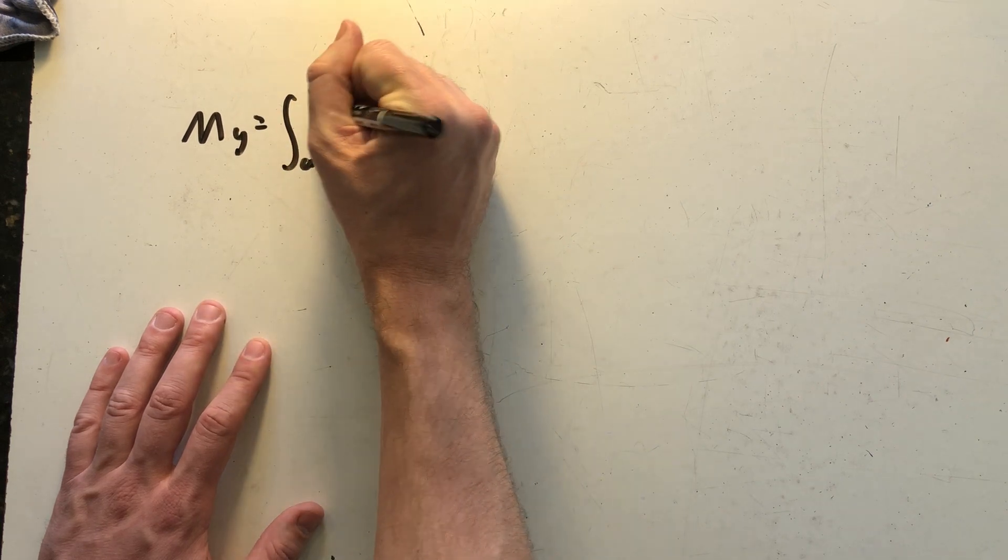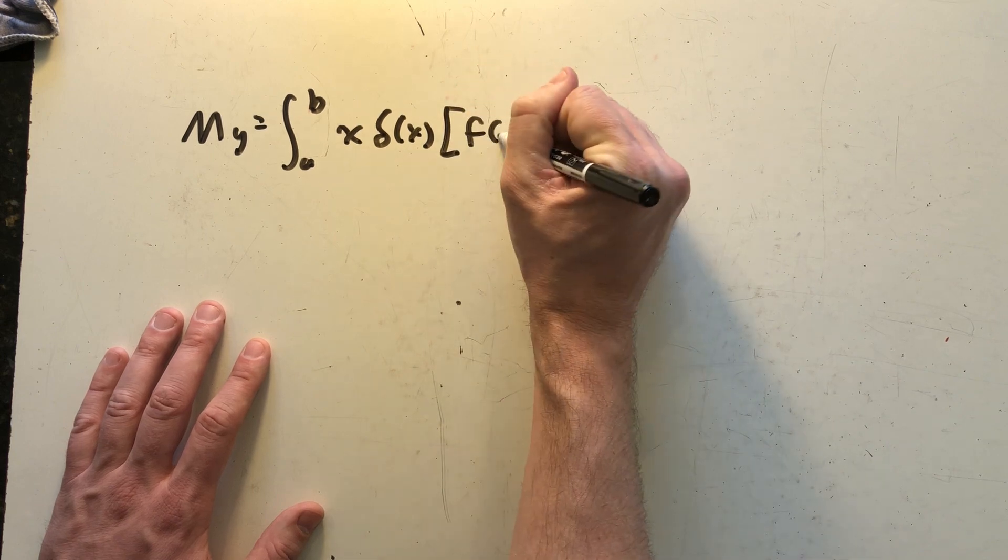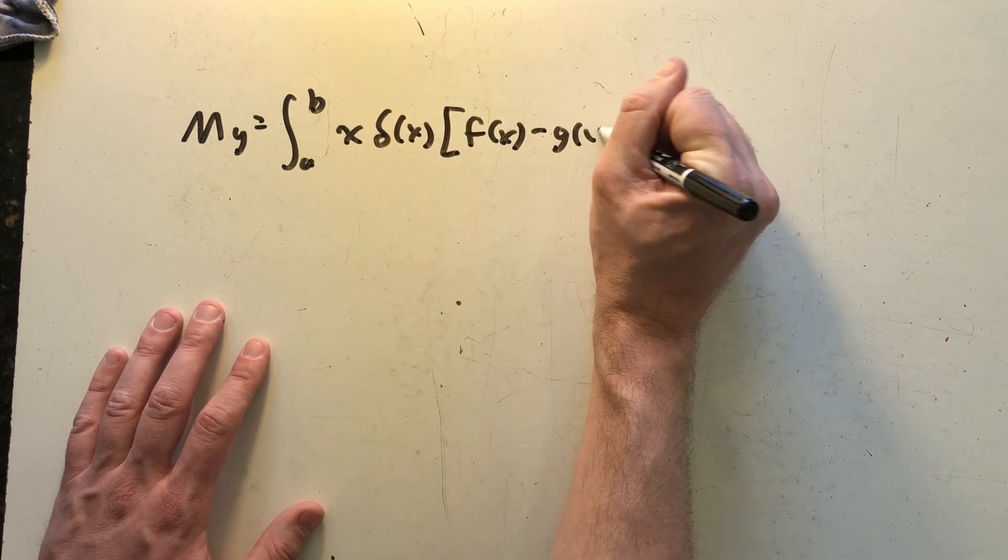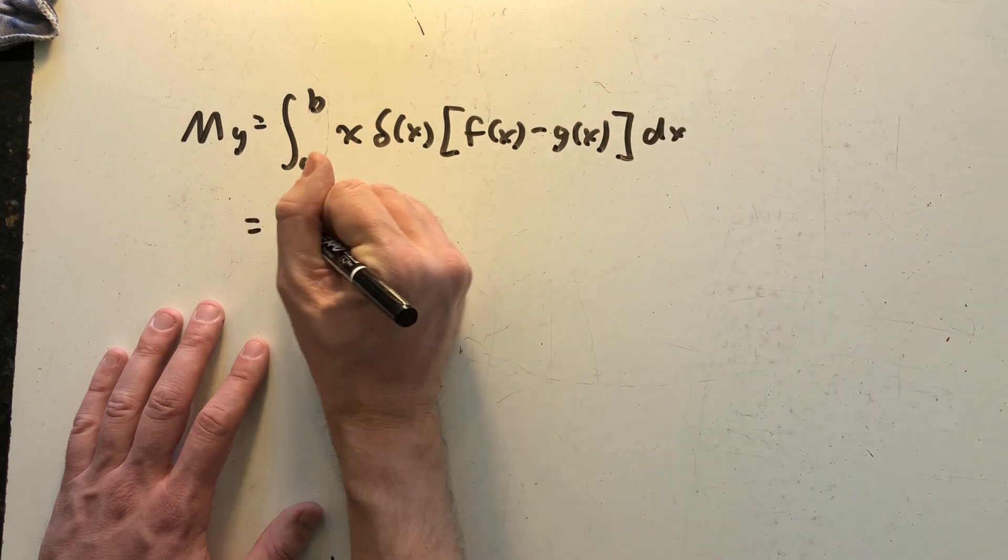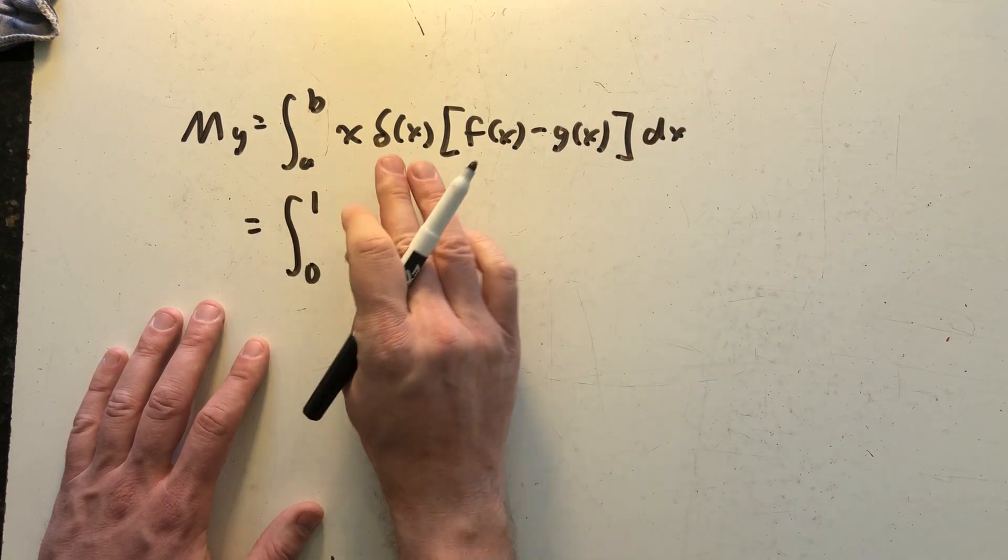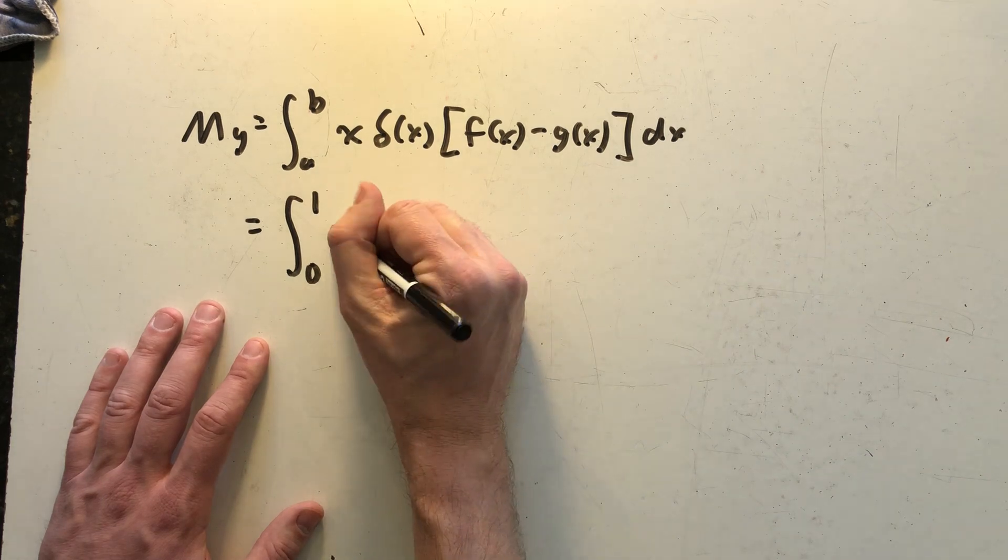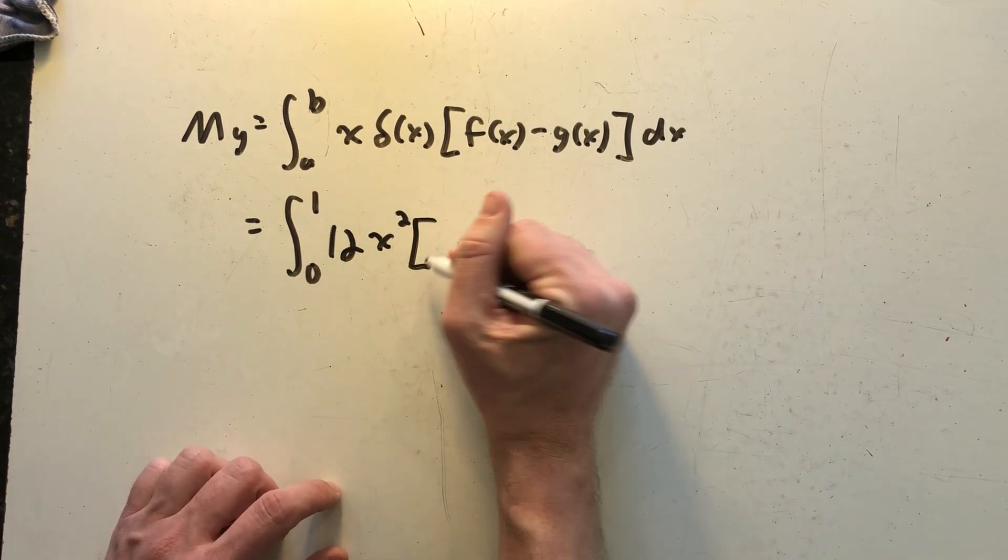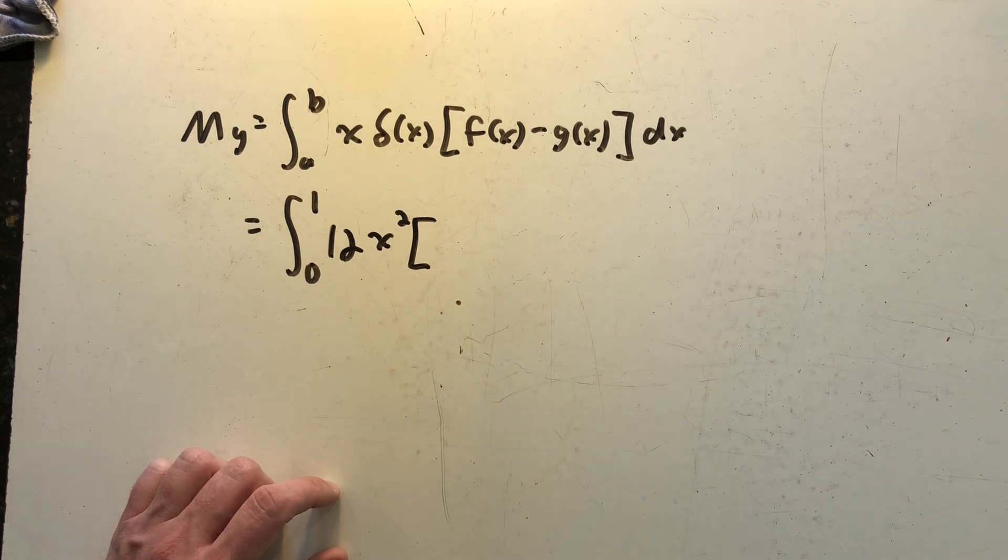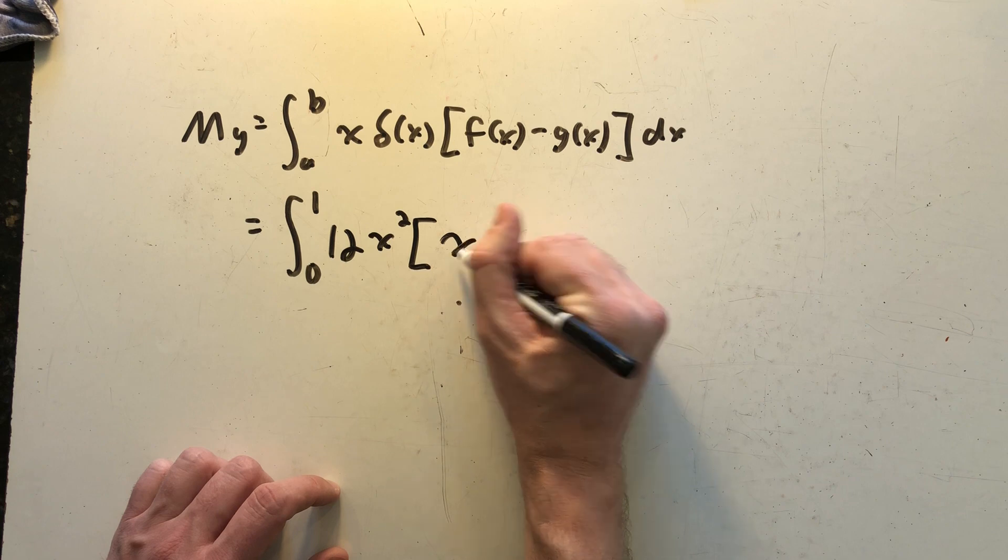To do that we need to set up this definite integral. We know we're integrating from zero to one. The density function is still the function 12x times x would be 12x squared. And here for the moment about the y-axis we're just finding the difference in the two functions, a top function and a bottom function, and so that is just x minus x squared.